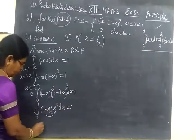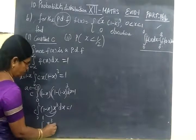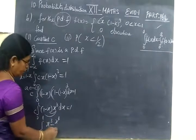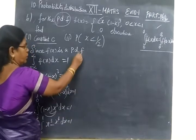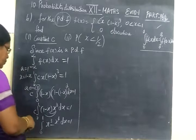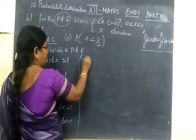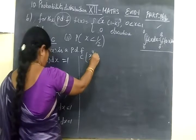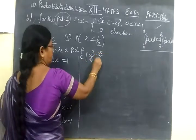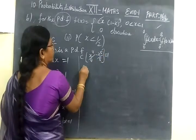Take x cube inside. So integral 0 to 1, x cube minus x power 4, dx equal to 1. So now you write the C, if we integrate it.